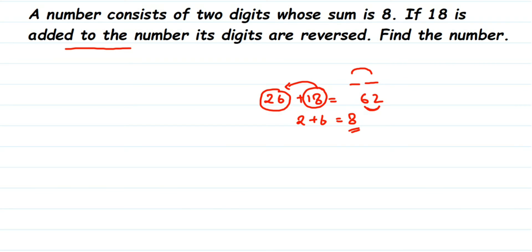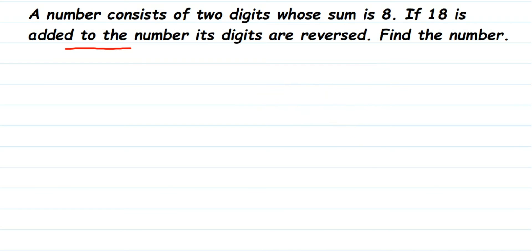Let's see how to solve this. They're talking about a two-digit number whose digit sum is 8. Since it's a two-digit number, we have a ones place and a tens place. I'm going to assume the digit in the ones place to be x, and using that I'll find the digit in the tens place.